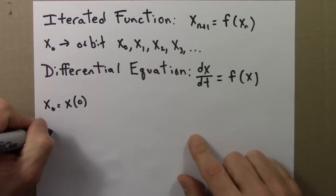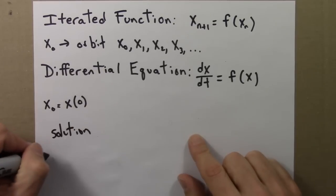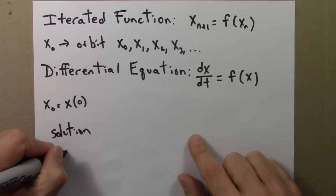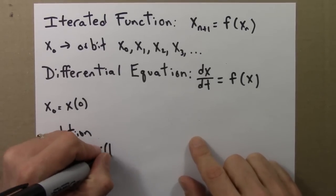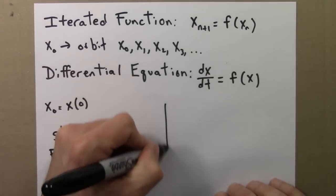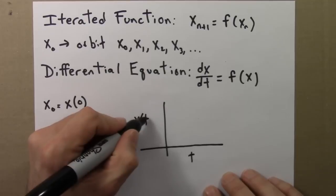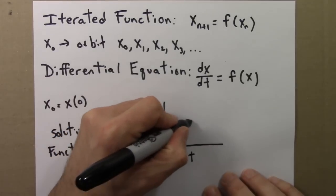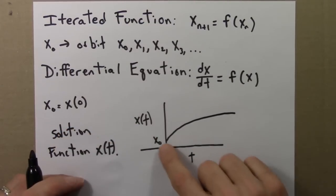So the solution would be a function x of t, and who knows, again I'm just making up an example. Rather than a time series plot which jumps around, is only discrete.